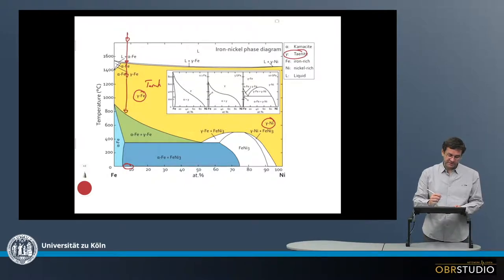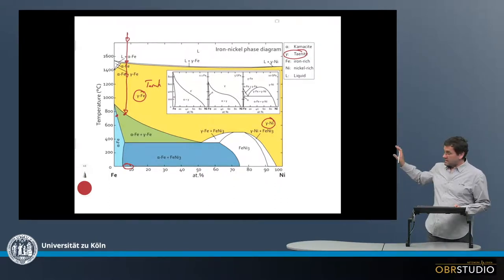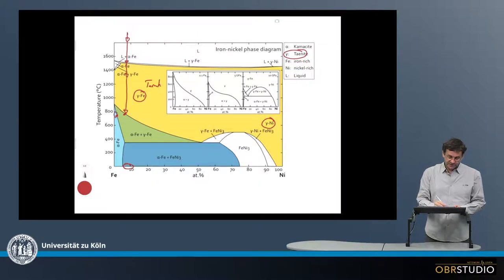This is then hitting at some temperature, something like maybe 700 degrees or so, a solvus. Here it decomposes into still remaining gamma iron and also into alpha iron. This alpha iron is also called, as you can see up here, kamacite. So this alpha iron here is kamacite. There are two phases then, the taenite and the kamacite.